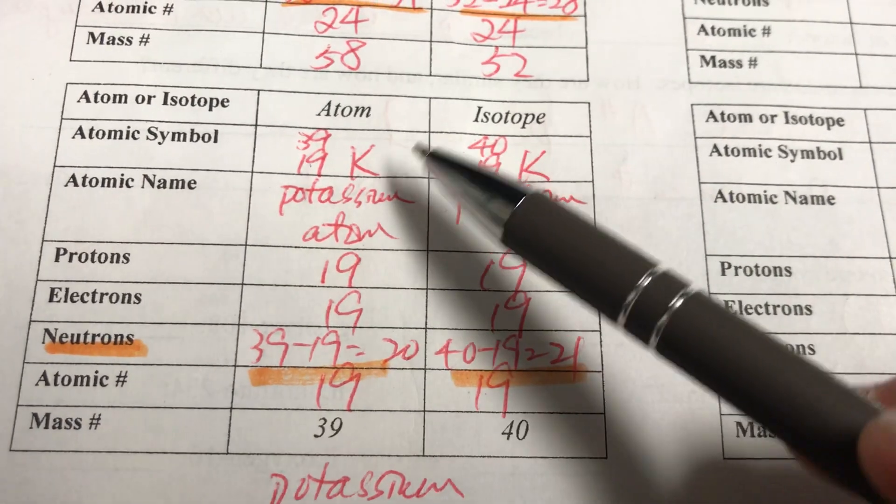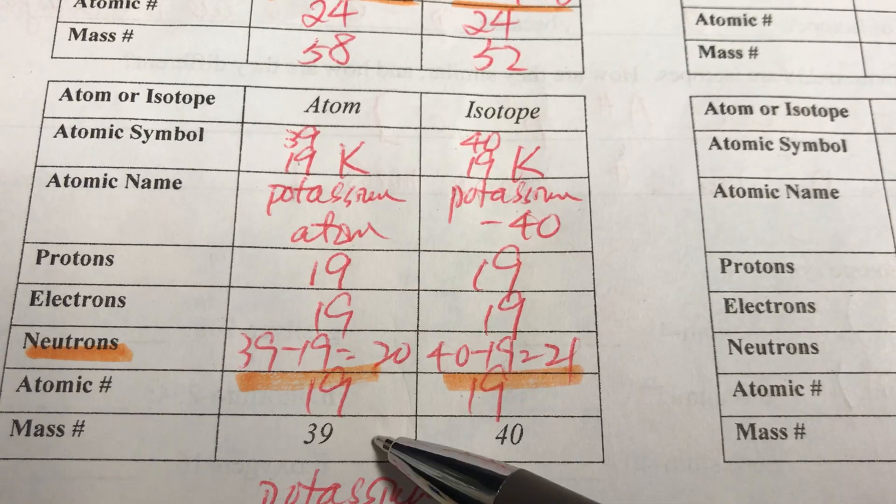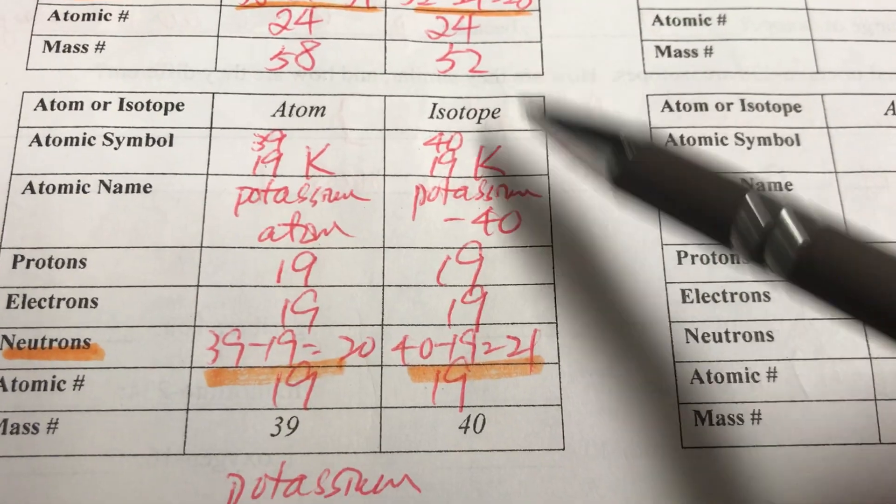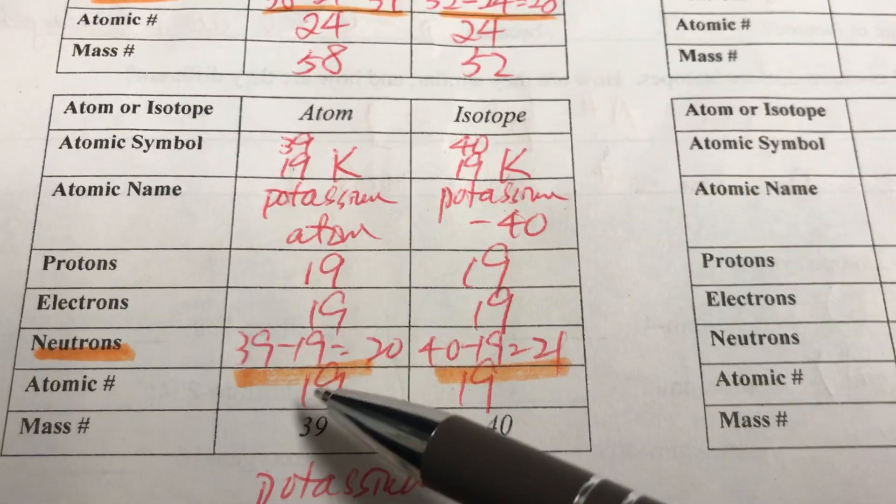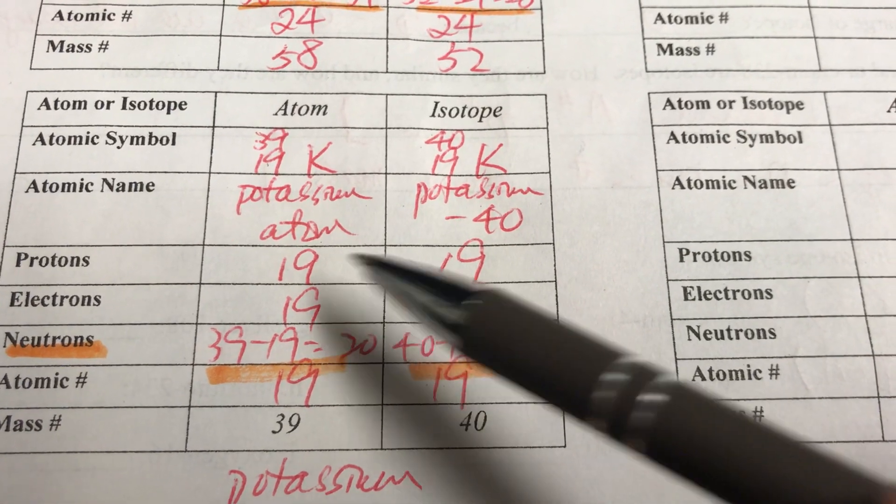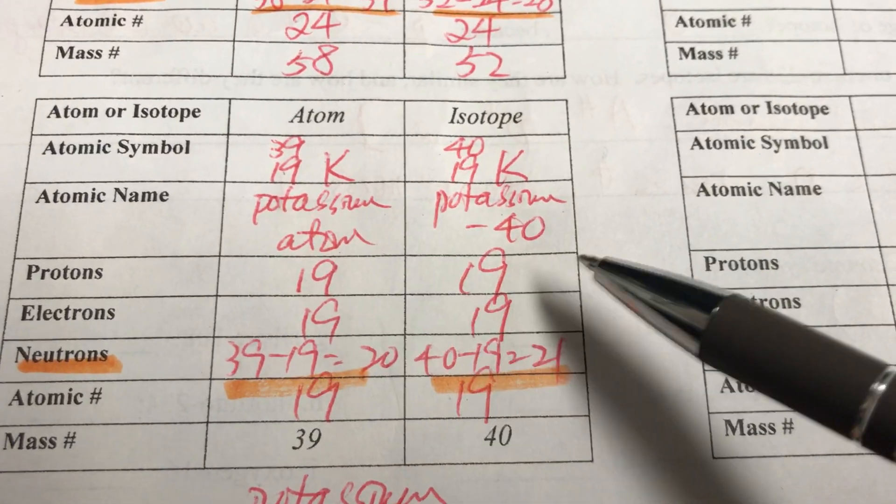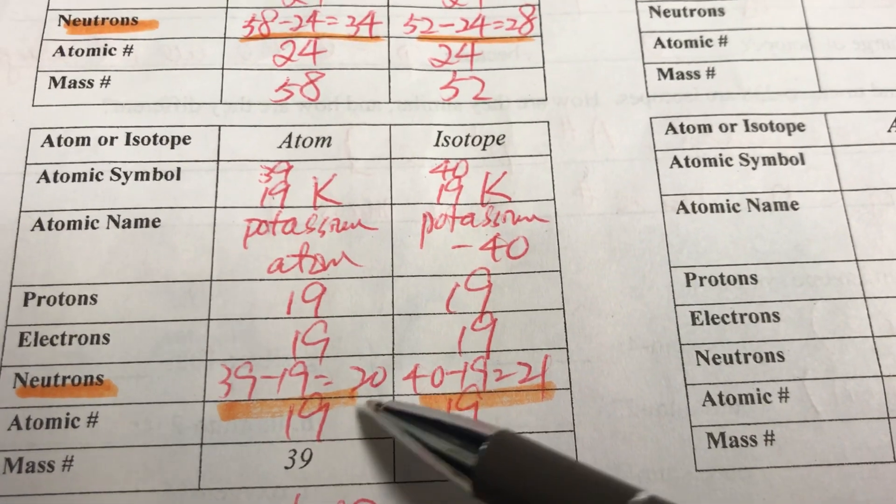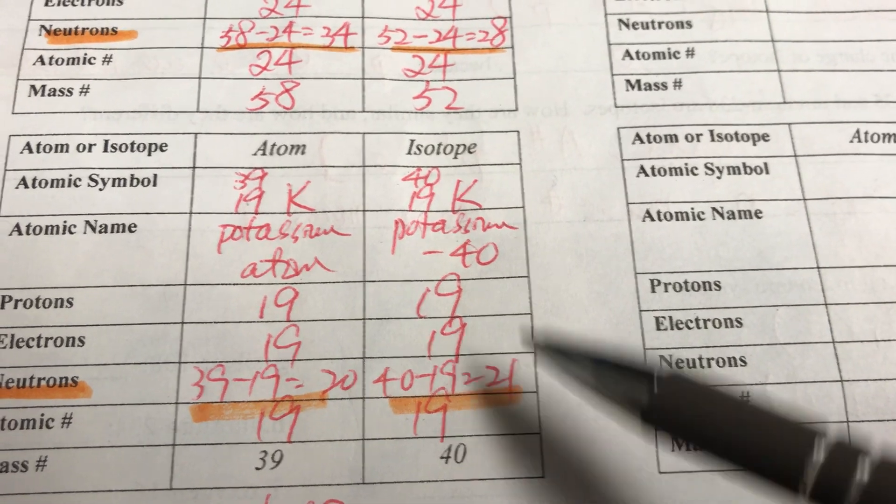Okay, this will be 19 because the atom, the mass number, is like 39, right? And then the isotope, this is 40. So we know that it's 19 and 19. Okay, electron 19, proton 19, and neutron will be mass number minus the atomic number, which is 20. This will be 40 minus 19 is 21.